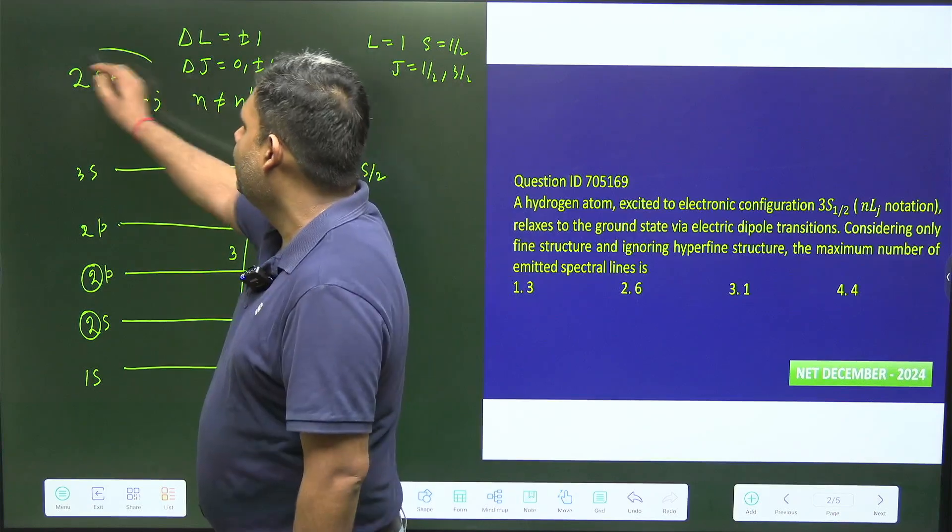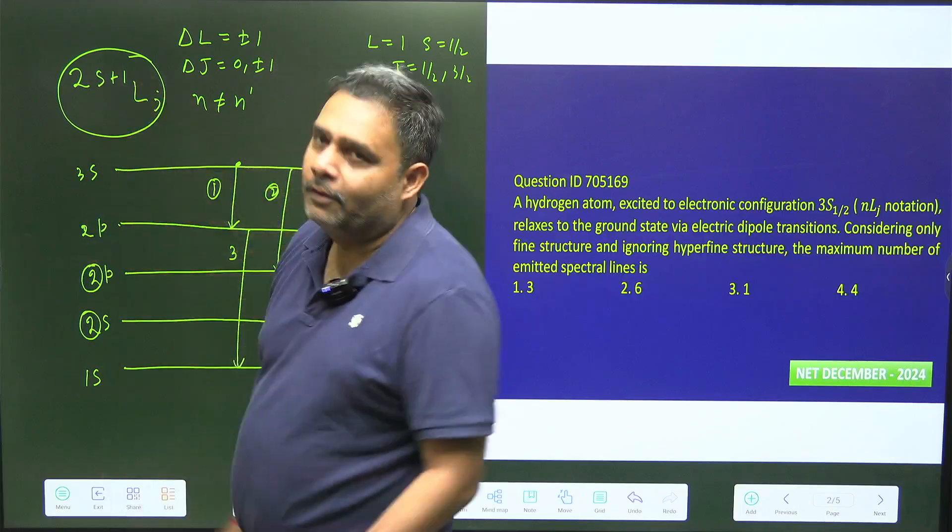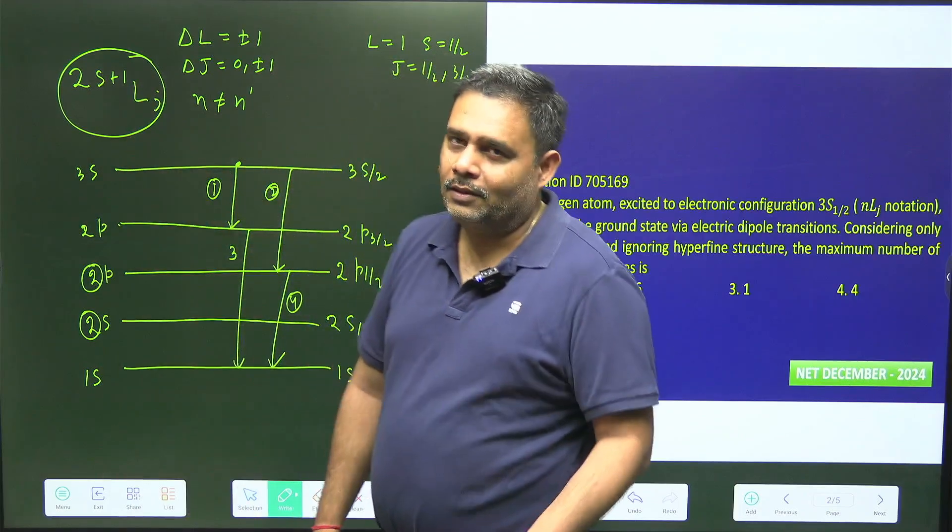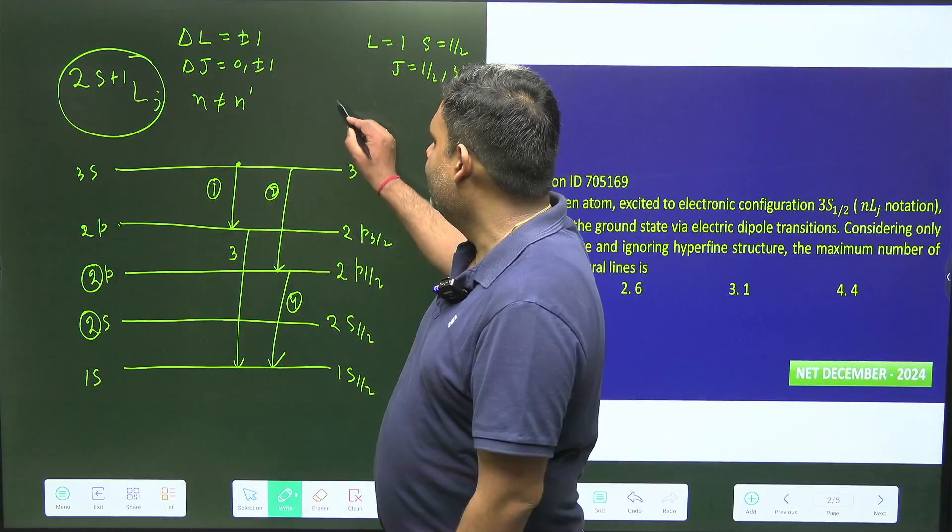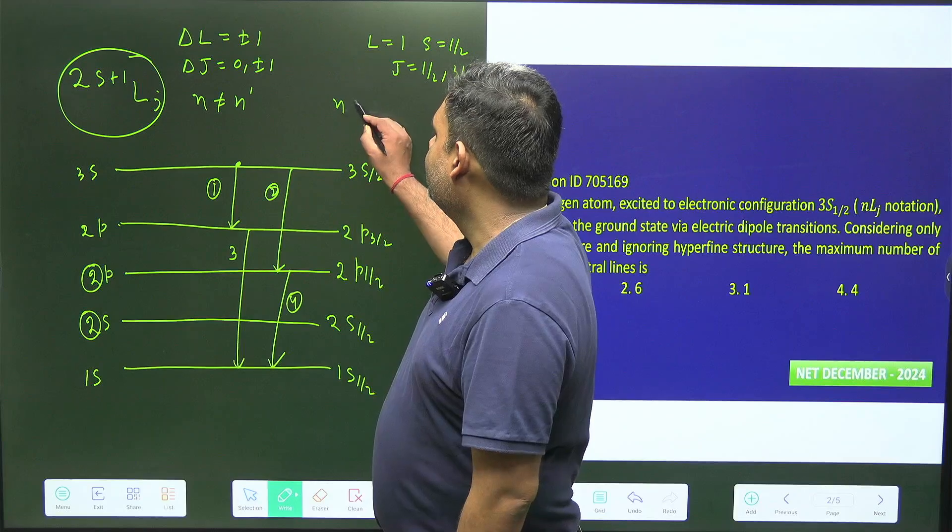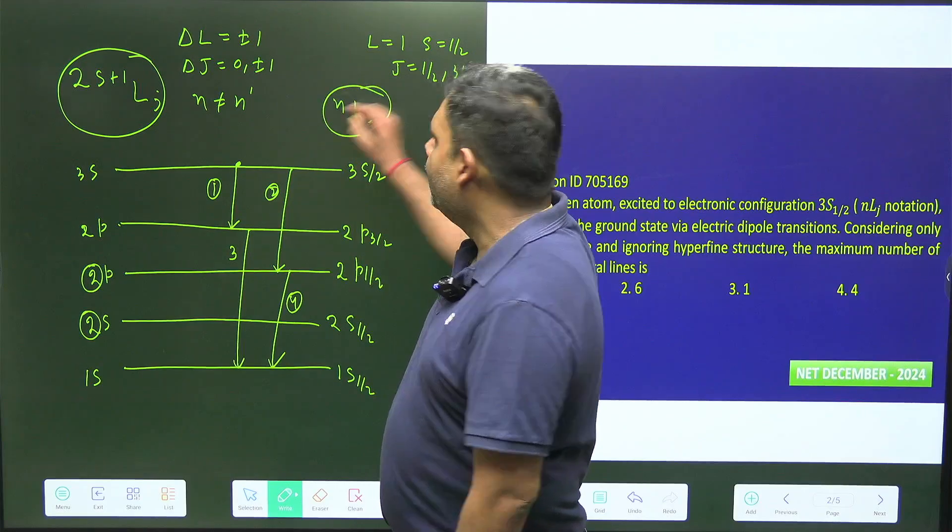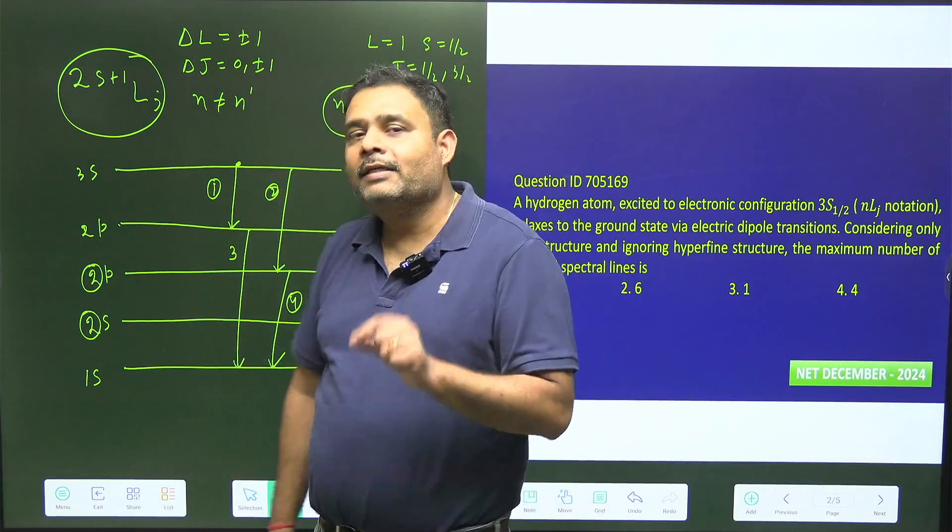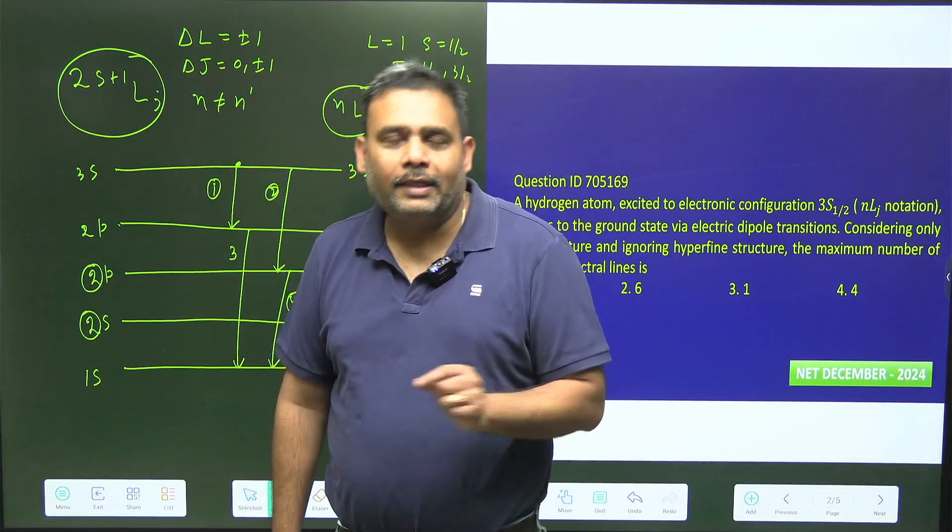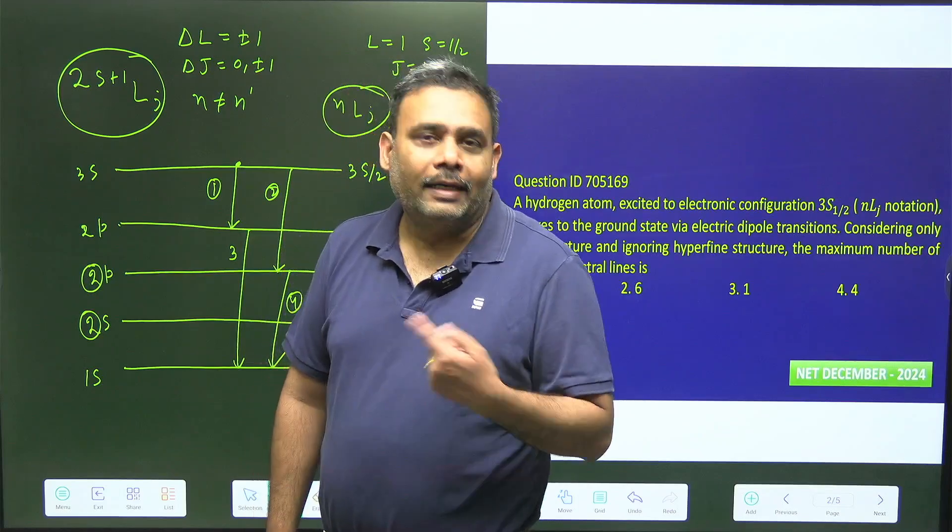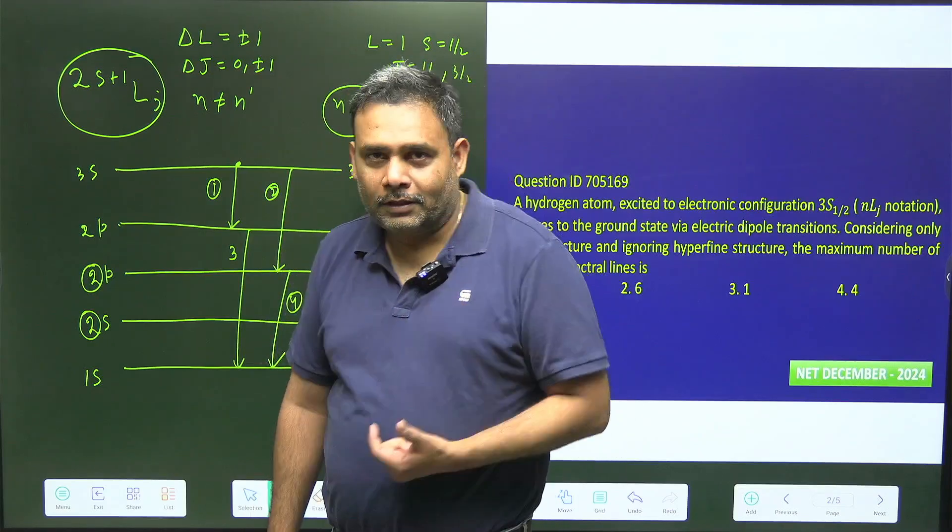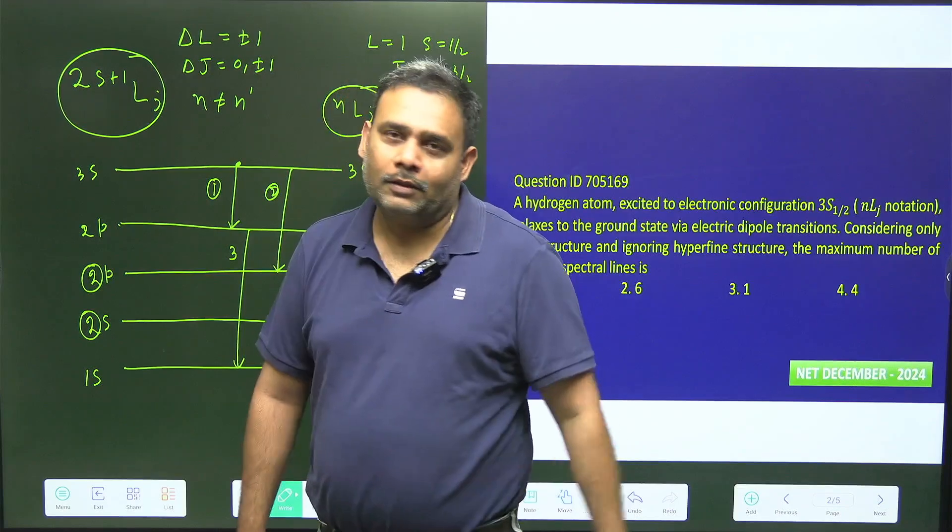But some places this is not needed for the hydrogen atom actually, because s equals always half for each and every orbital. So here the good quantum numbers are n, l, and j. And so in the fine structure we have seen for the hydrogen atom, what is the good quantum number? The good quantum numbers are n, l, and j. So why are we doing this thing for this particular hydrogen atom?